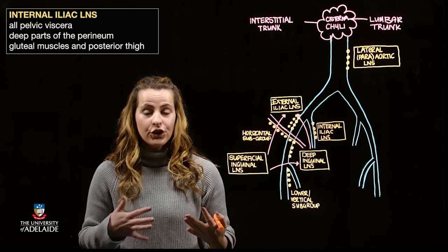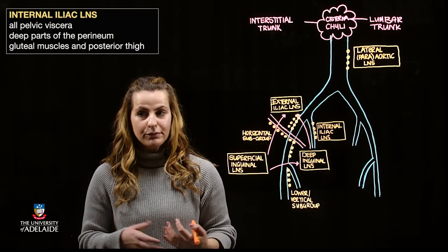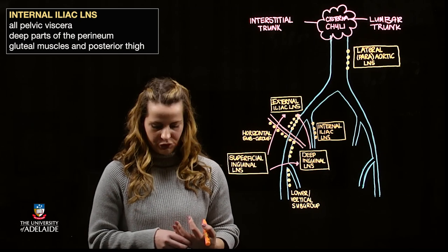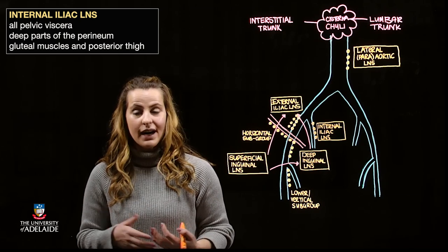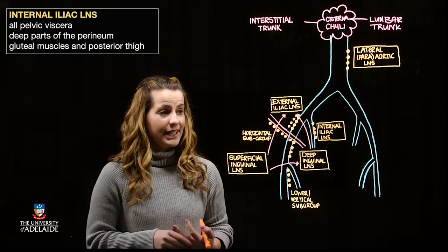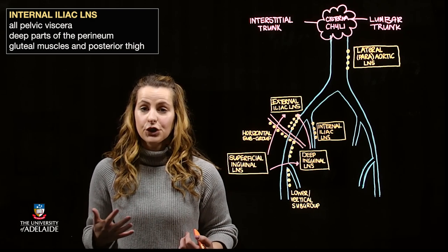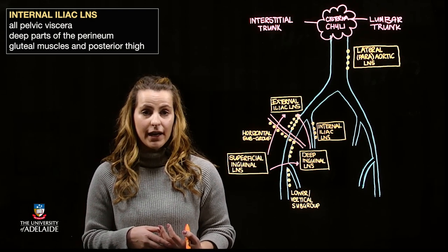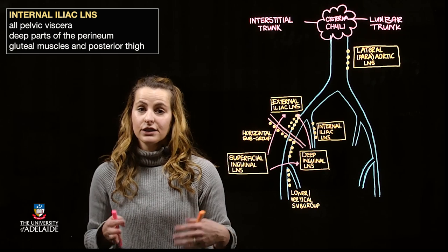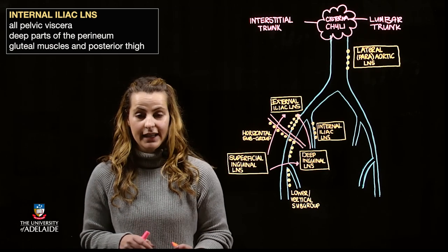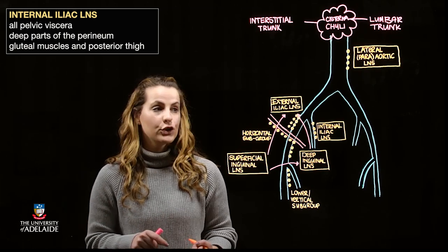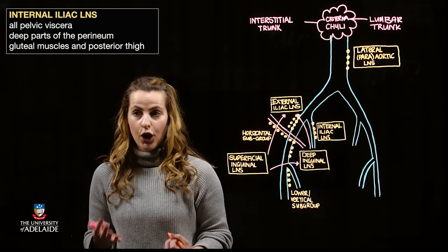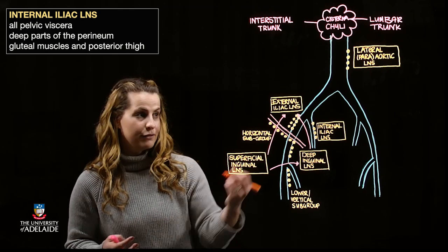The internal iliac lymph nodes will receive lymph from all of the pelvic viscera, as well as the deep parts of the perineum, and muscles associated with the gluteal region and the thigh. Both the internal and external iliac lymph nodes are then going to drain back into the common iliac lymph nodes.